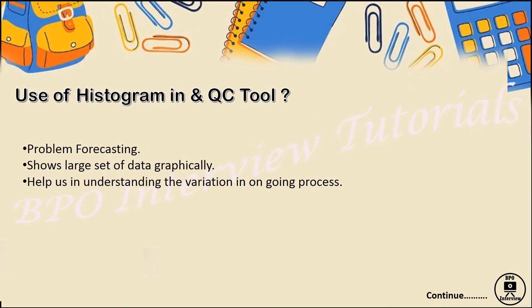Let's move to the second part of the theory — the use of histogram in seven quality tools. Histogram is used for problem forecasting. Here we will represent a large set of data in a graphical manner. The main use of histogram is to show the variation in our ongoing process, helping us identify variations in our process.